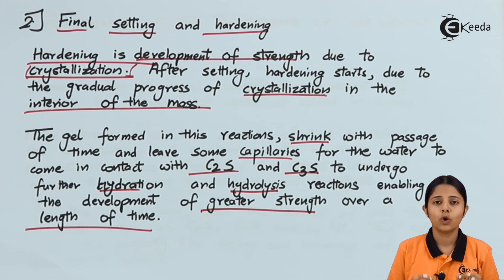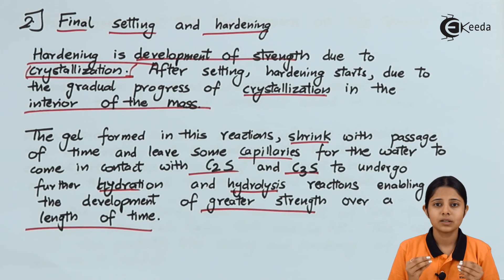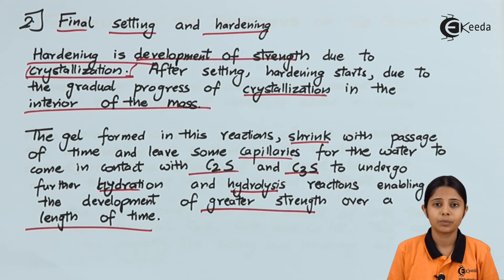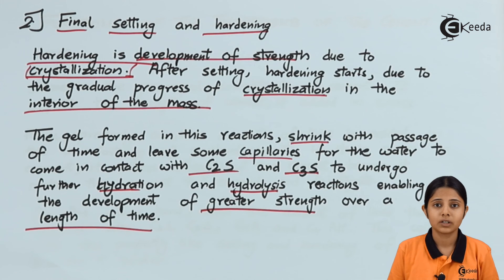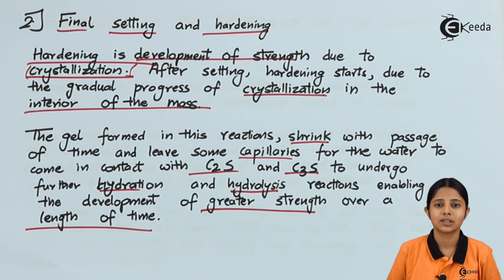In today's session we studied the two most important properties of Portland cement — setting and hardening. We studied how setting is important and leads to crystallization, examined the reactions of setting, and saw how after crystallization, hardening takes place, leaving certain capillaries for water absorption. Both processes are extremely important. Thank you for watching — stay tuned to e-Kira and subscribe.